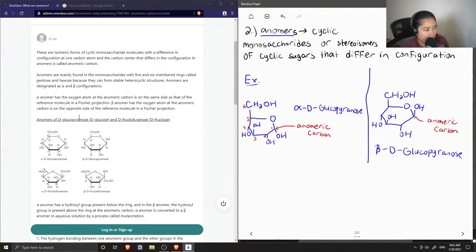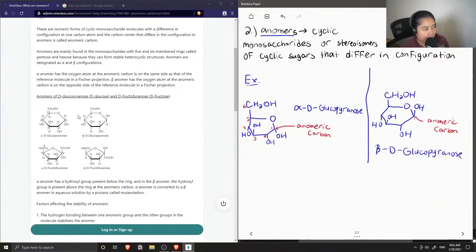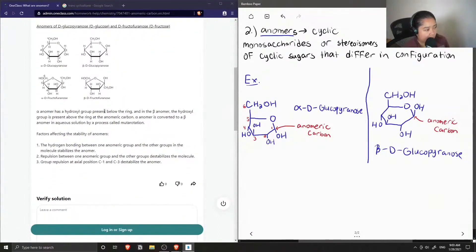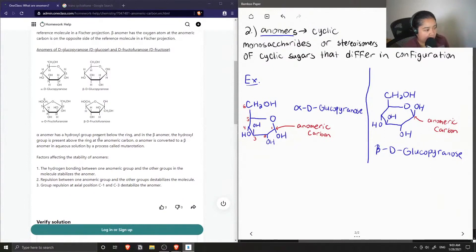Okay, so they have the different anomers of D-glucopyranose, which is the one that I drew. And they also have D-fructofuranose. And they just have the examples below. Alpha anomer has a hydroxyl group present below the ring. And in the beta anomer, the hydroxyl group is present above the ring at the anomeric carbon.